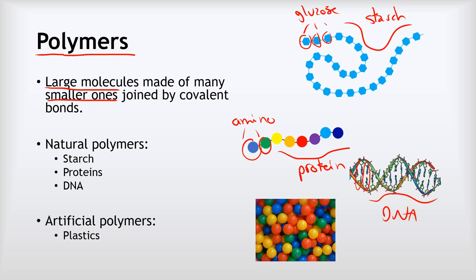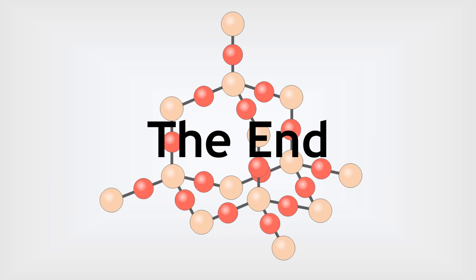And we've also got artificial polymers as well, so all the things that we tend to call plastic, those are different types of artificial polymer. So that's it, that's covalent structures. Well done if you got to the end.